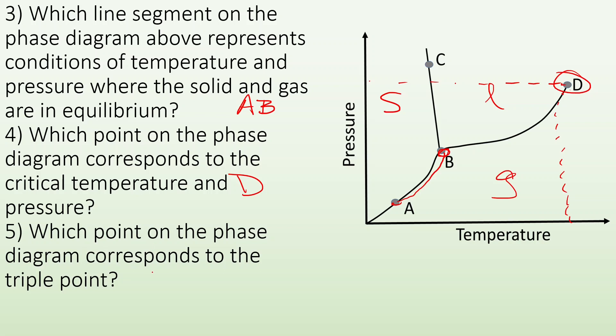Five: which point on the phase diagram corresponds to the triple point? That is B. It's where those three lines come into play. So hopefully if you knew nothing about phase diagrams you could still be like, hey, triple point - let me find somewhere where there's three going on, and you find it right at point B.